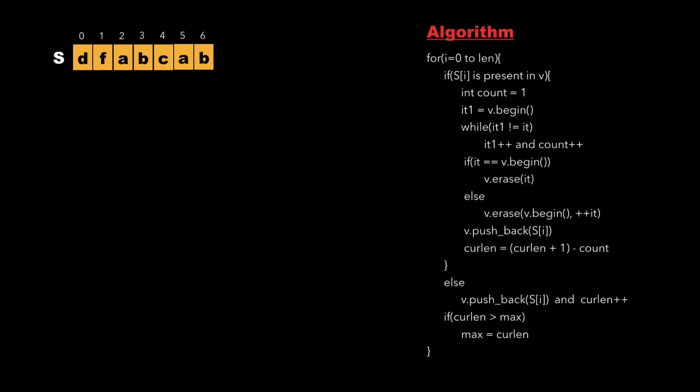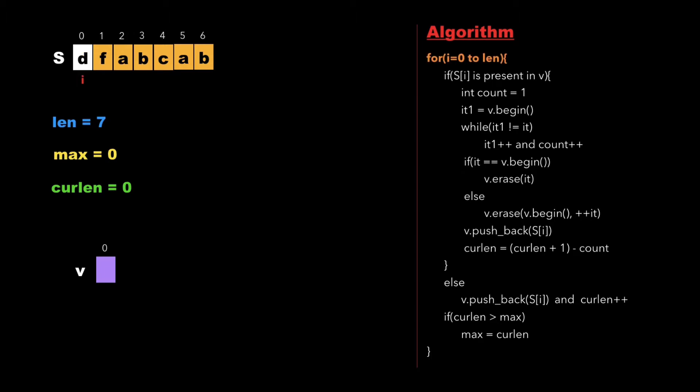Let's consider a string which is 'dfabcab'. The right side of the screen shows the algorithm. We declare a few variables: 'length' which is the length of the string, two variables 'max' and 'current_length' initialized to 0, and we also create a vector of type char which is an empty vector.